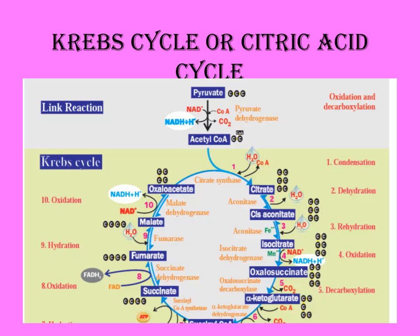Totally there are 10 steps in the Krebs cycle. NADH is generated from isocitrate to oxalosuccinate. ATP is generated when succinyl-CoA is converted into succinate. FADH2 is generated when succinate is converted into fumarate.